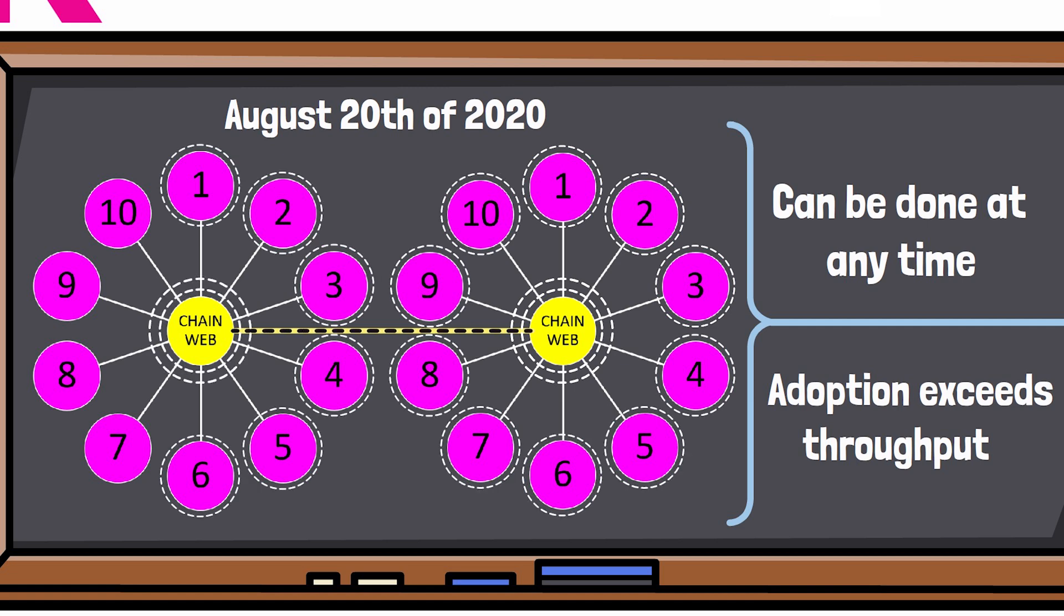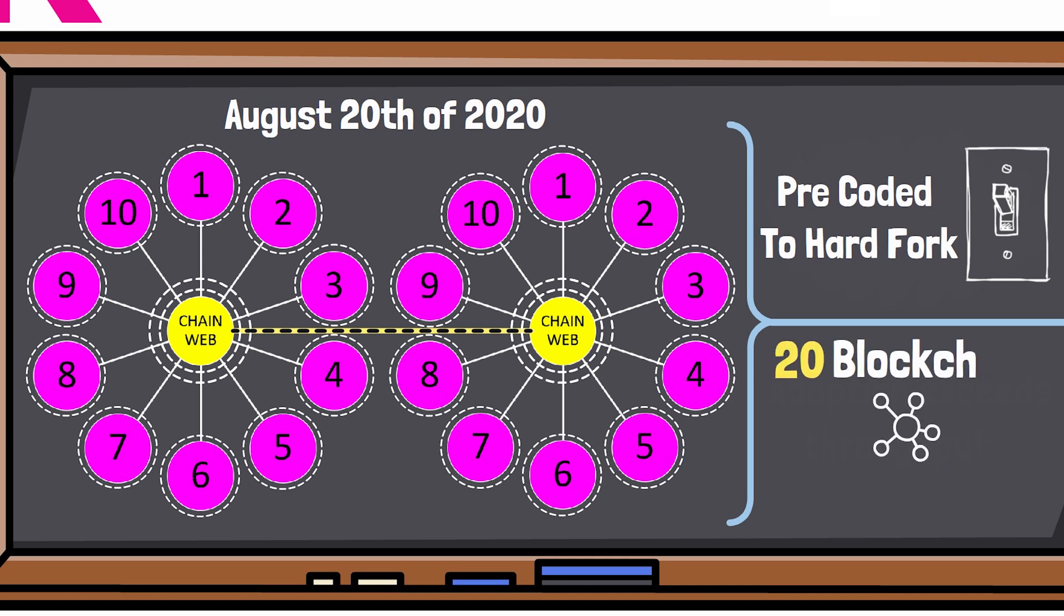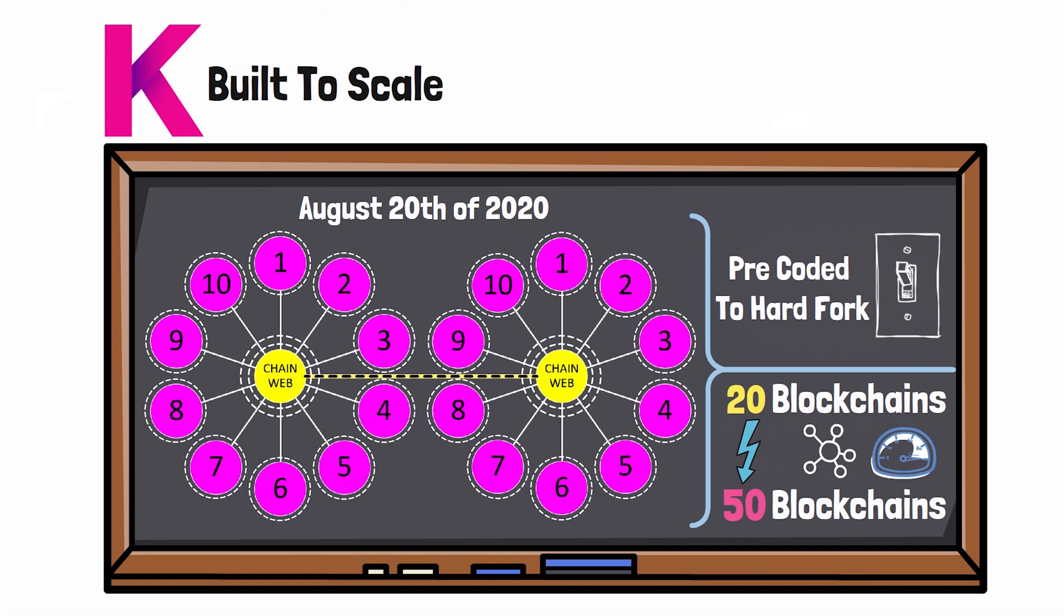Just like flipping a light switch, when they are ready, the blockchain can fork from 20 blockchains to 50 blockchains in a matter of seconds. Now I already know what you're thinking - this sounds like a lot of hopium, right?